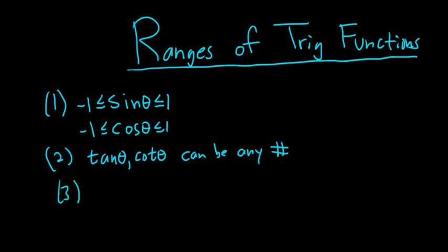And three, this one's not as important, but you can reason it from these up here. So if sine is between negative 1 and 1, then the reciprocal of sine is cosecant. So cosecant of theta, cosecant is 1 over sine. So this should be less than or equal to negative 1 or bigger than 1.